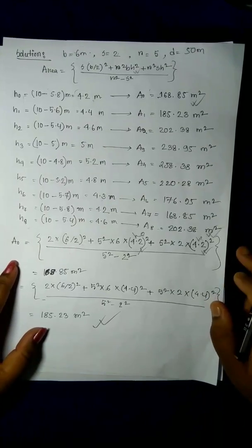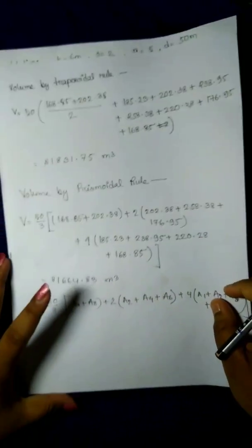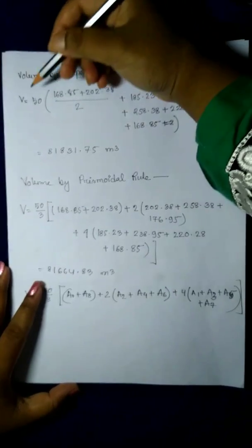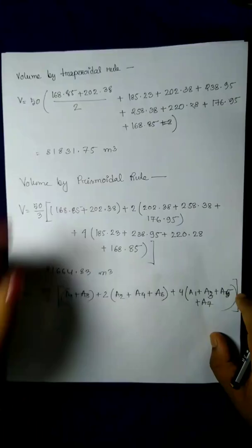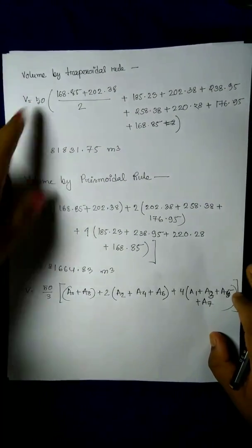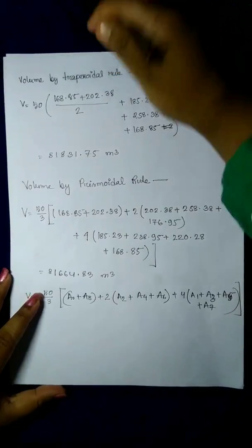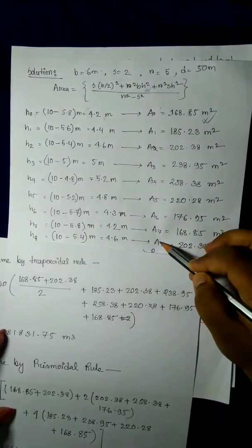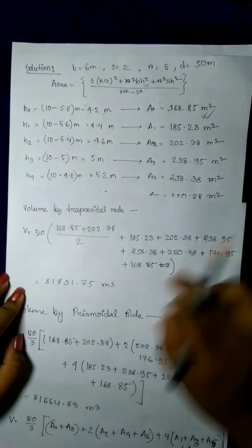The volume calculation uses the trapezoidal rule. The trapezoidal rule formula is: Volume equals the regular distance times (first area plus last area divided by 2, plus the sum of the remaining areas). This gives the volume in cubic meters.